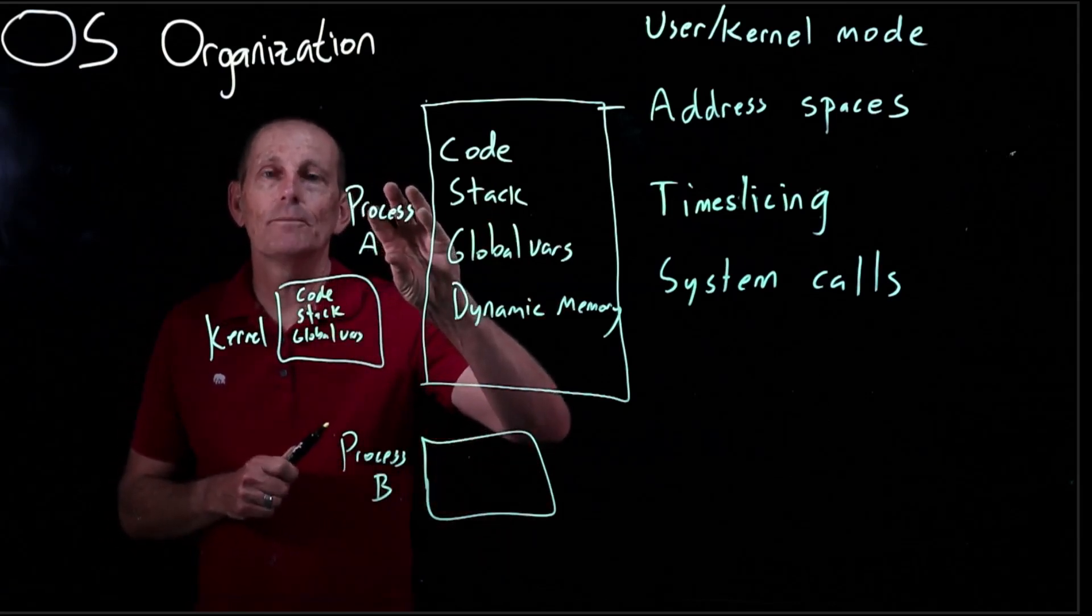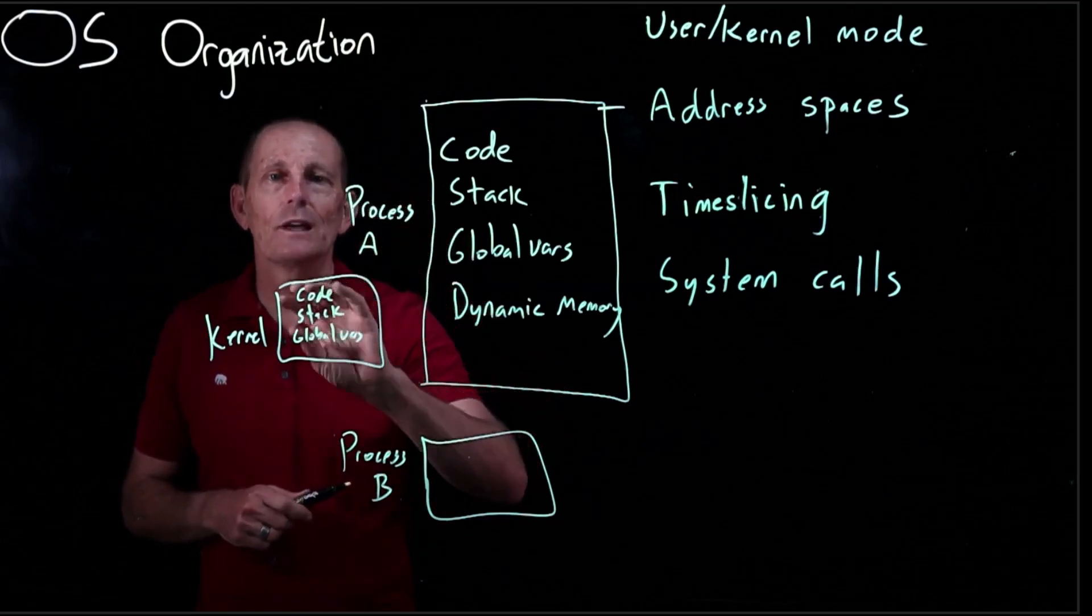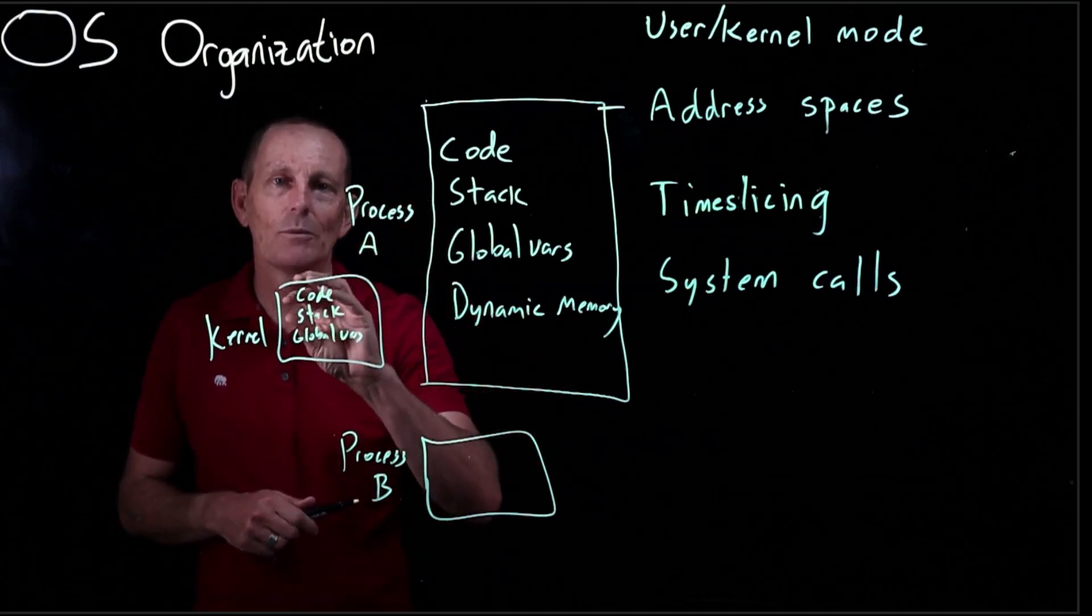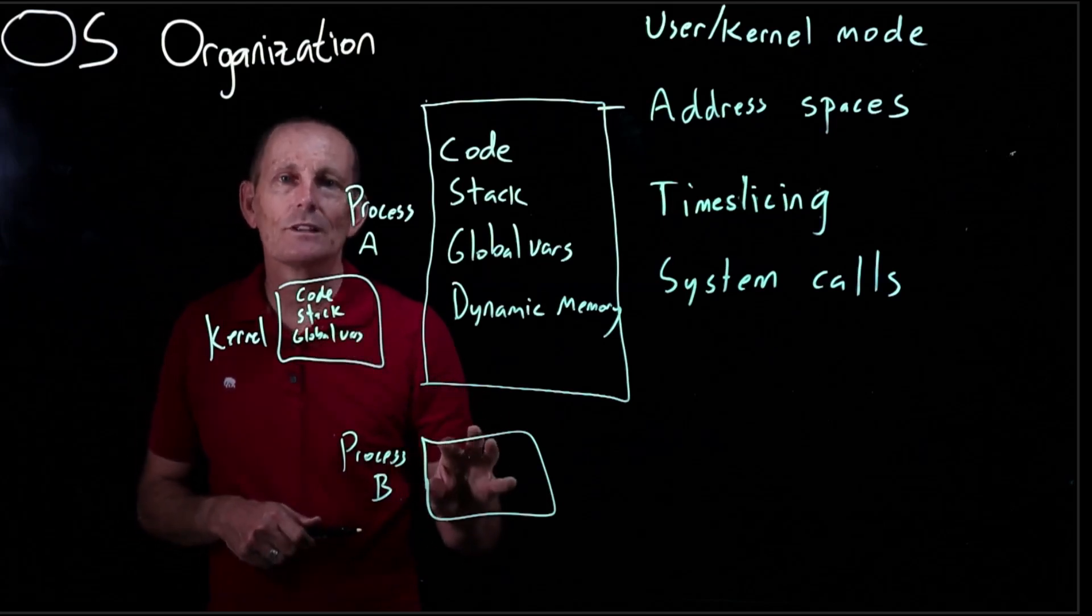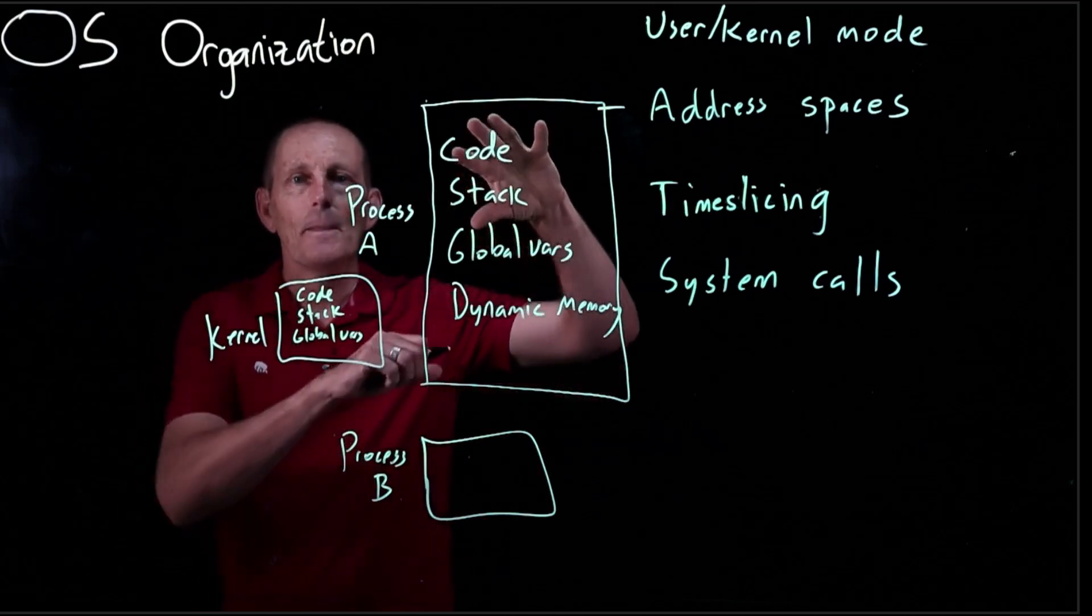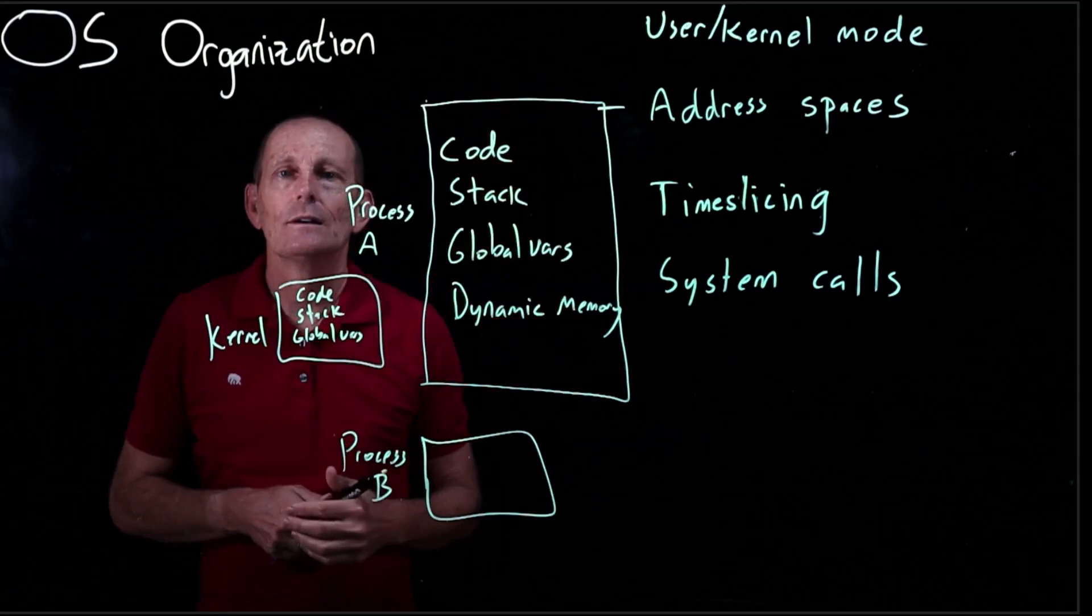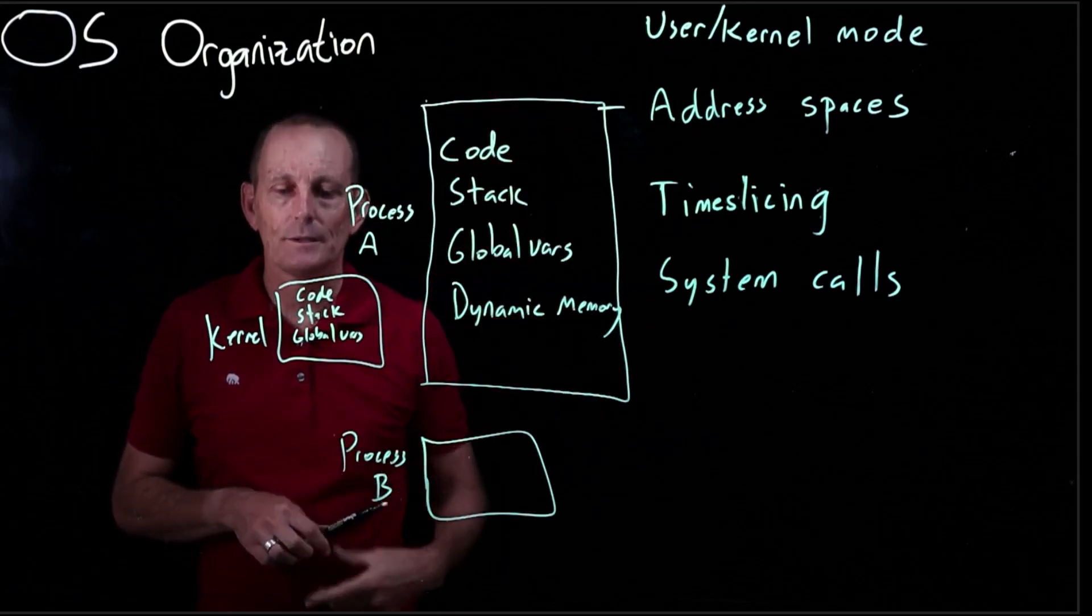So as process A is running, it is in user mode. It is blocked from reading or writing this code, stack, global variables, dynamic memory. It's blocked from reading and writing this one. In fact, everything is blocked except the pages of memory that are specifically allocated for this process.